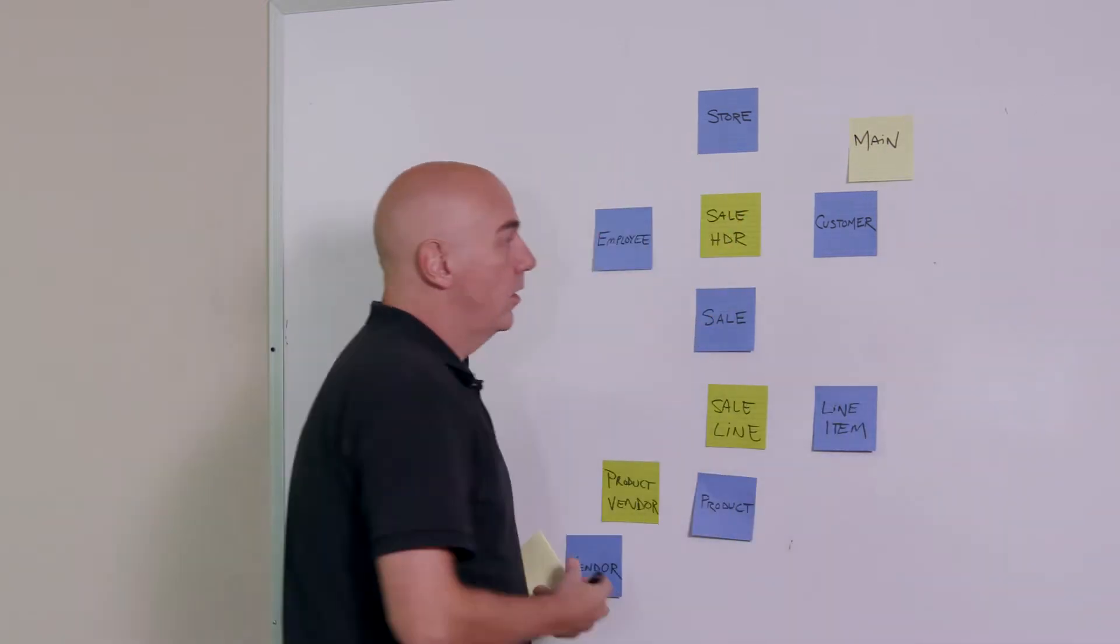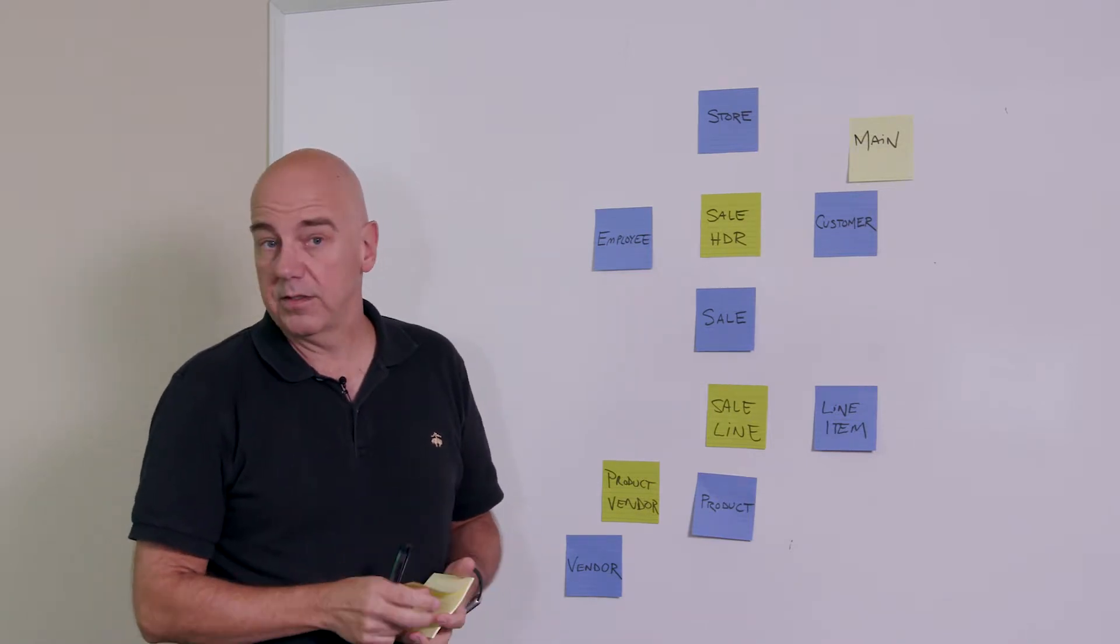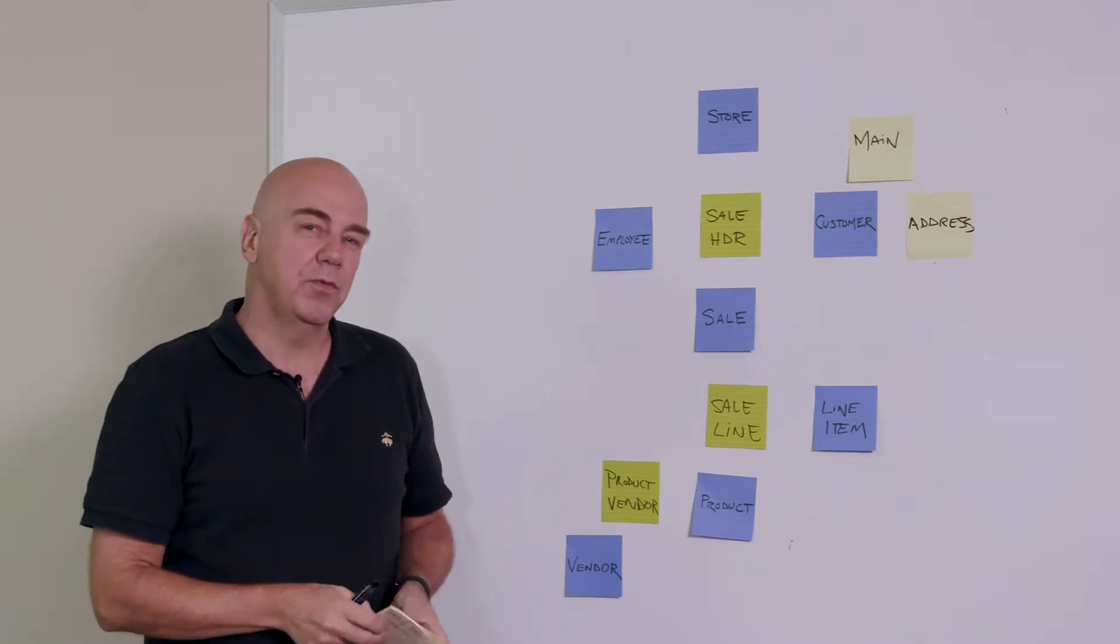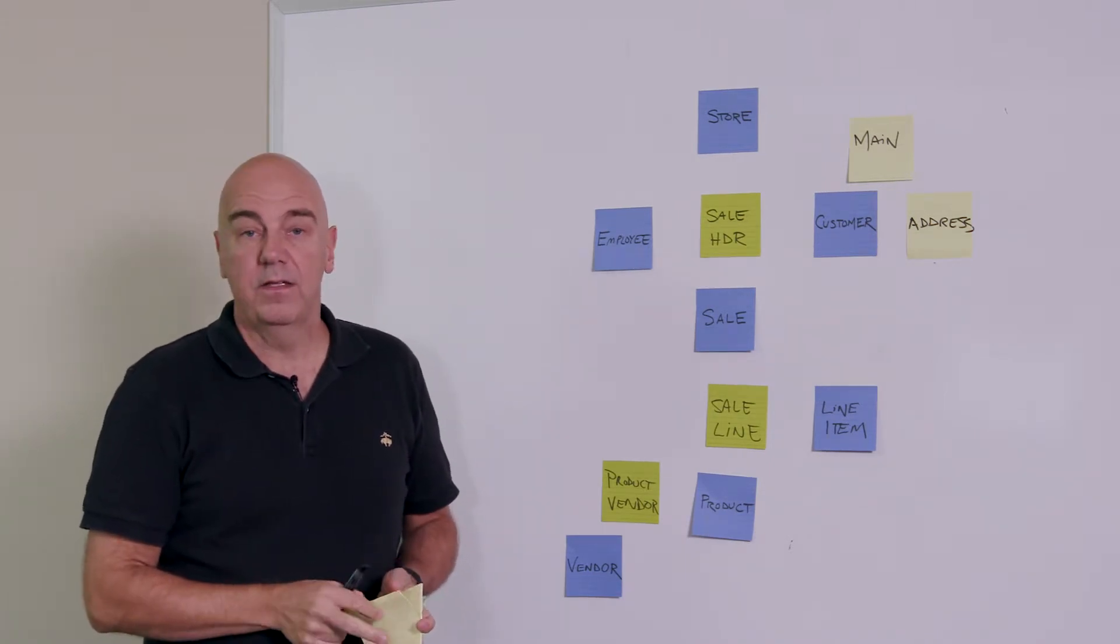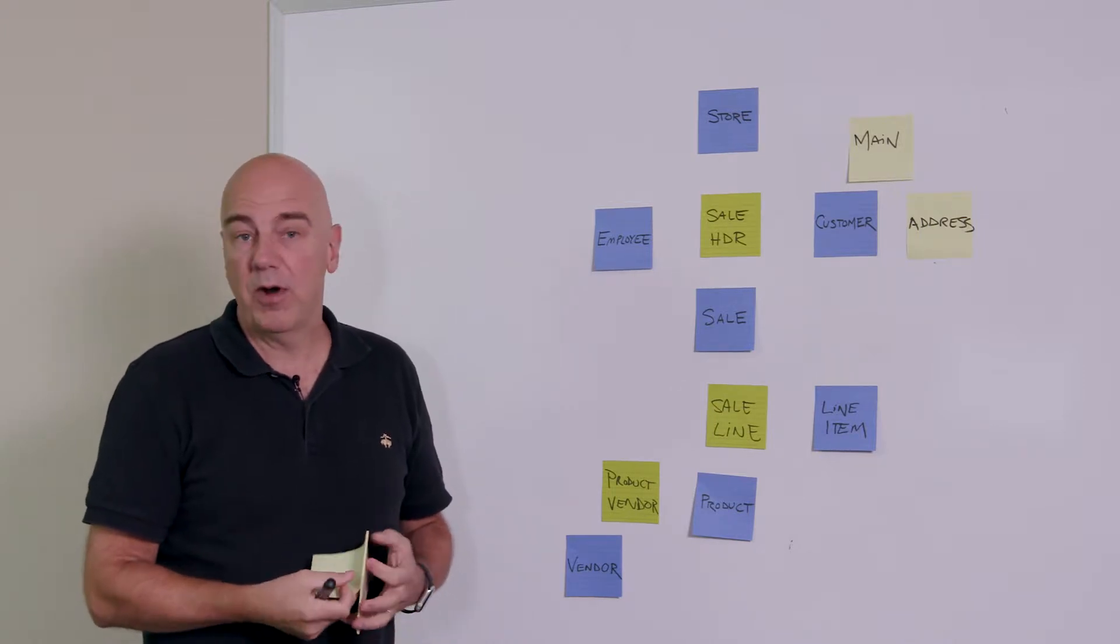Also for customer, we might have information about their address. And we might also have something that changes more frequently. For example, rating. Is this a good customer or is this a bad customer? Are they profitable or are they not profitable? Those kinds of things.